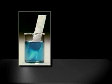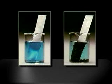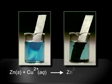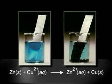When a strip of zinc metal is immersed in an aqueous copper 2 sulfate solution, electrons are transferred from zinc to the copper 2 ions. Copper metal deposits on the zinc strip and collects at the bottom of the flask. Zinc atoms are oxidized to zinc 2 ions, which enter the solution. This spontaneous oxidation-reduction reaction is summarized in the chemical equation shown.